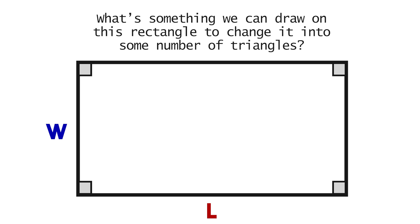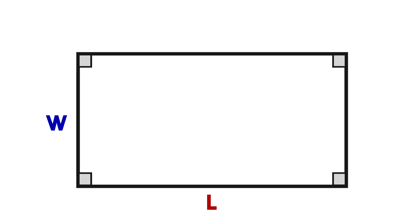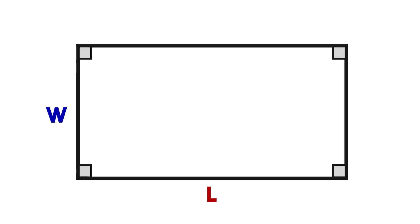So what's something that we can draw on this rectangle to change it into some number of triangles? I very much encourage you to pause the video and think about something you can do to this rectangle that will change it into two or more triangles. So one thing we can do is draw a straight line from one corner to the other corner, like so.